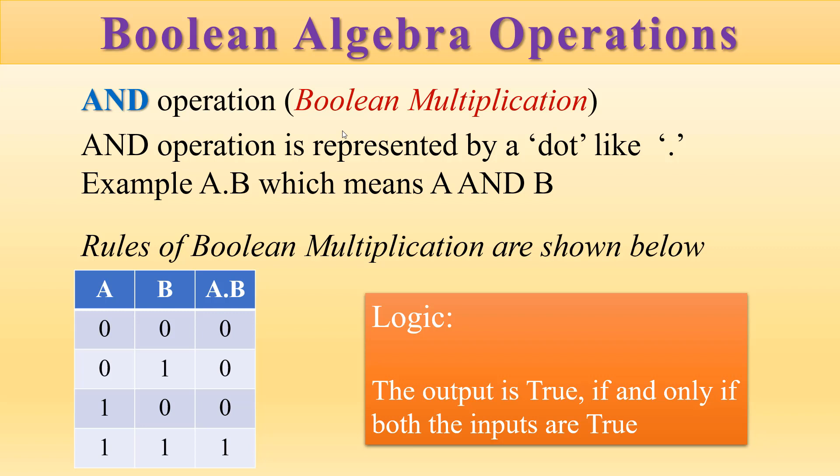The logic of this operation is that the output is true if and only if both the inputs are true. Both the inputs are A and B, and if they have a value of 1, then only the output will be 1. This is the fundamental AND operation.